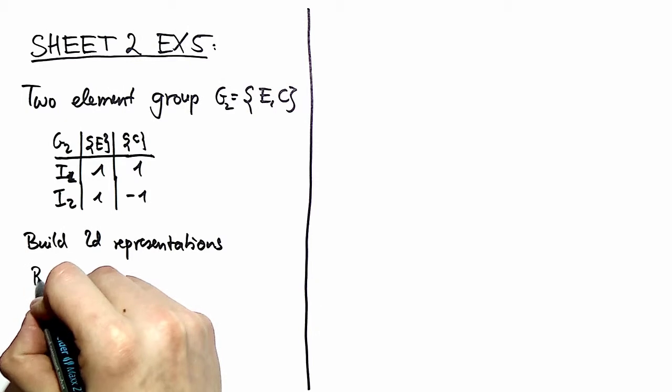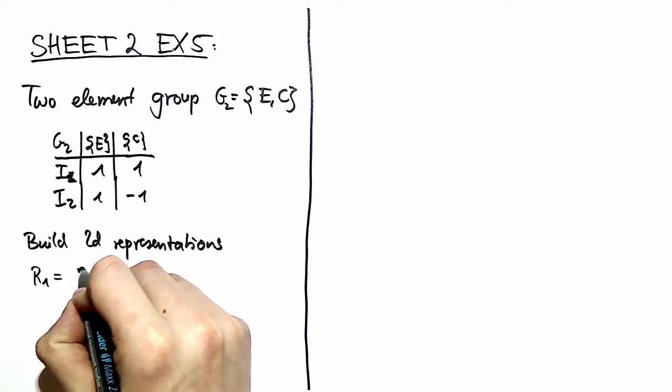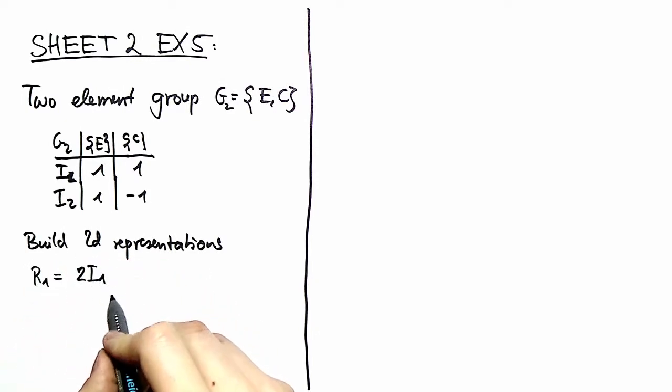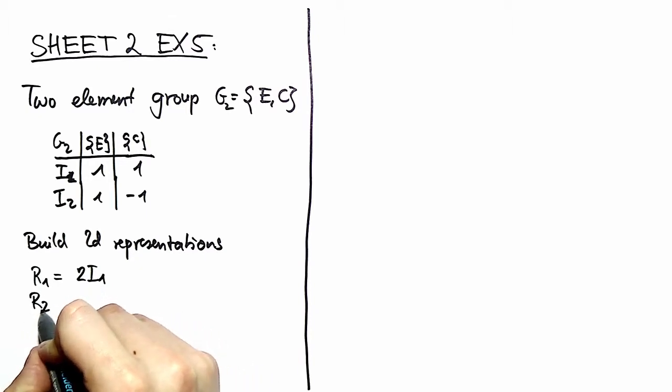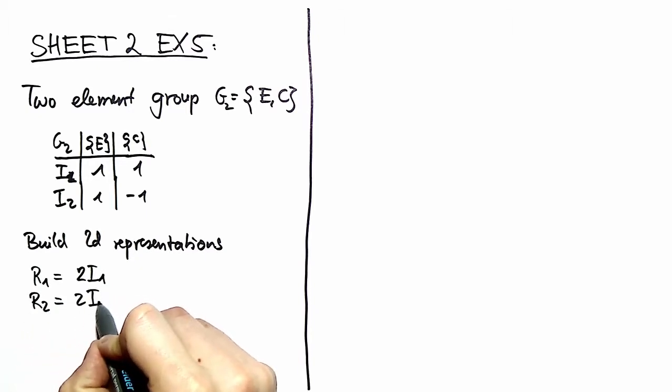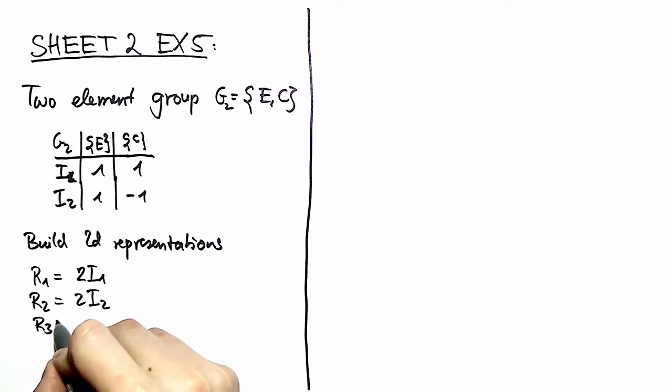One we call R1, and this is equal to two times the identity representation. Then we have R2, which is two times the parity representation, and then we have R3, which is the direct sum of both.